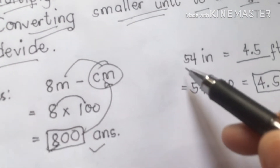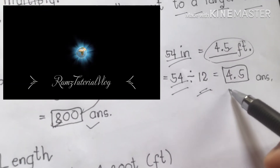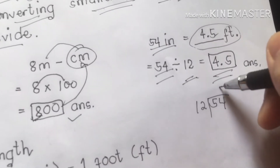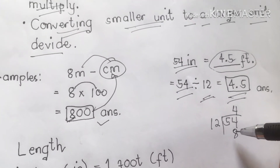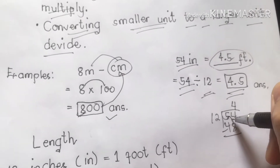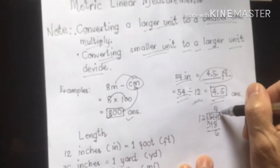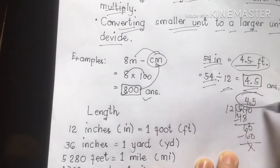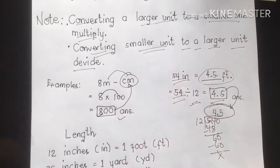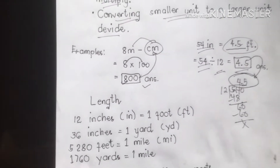Another example: 54 inches to feet. We're going to divide 54 by 12, because we're converting a smaller unit to a larger unit. 4 times 12 is 48. We subtract: 54 minus 48 is 6. Bring down a zero: 60 divided by 12 is 5. So the answer is 4.5 feet. That is how we get 4.5 from 54 inches.